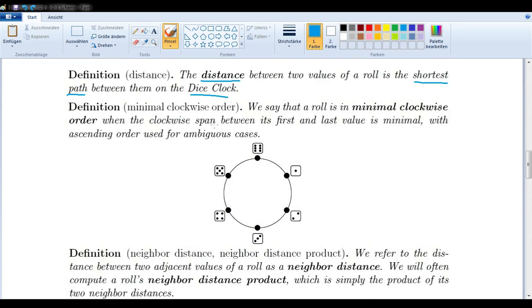So, that being said, we can talk about minimal clockwise order. We say that a roll is in minimal clockwise order when the clockwise span between its first and last value is minimal. Let's say we rolled a six and a one and a four. If we took six as our first value, then the clockwise span would encompass one, two, three, four hours of the clock. If we started on one, then this clockwise span would be five hours. And if we started on four, it would only take these three hours. So this is something very simple, just putting them as close as they can be put on the dice clock.